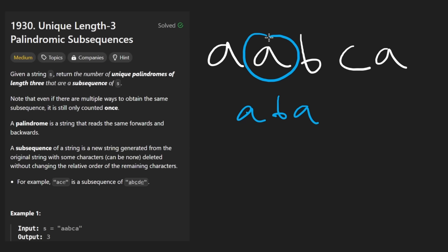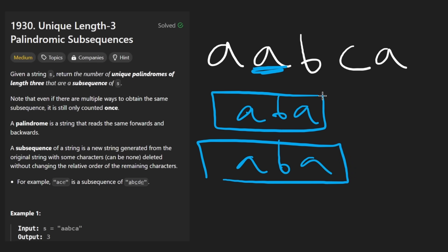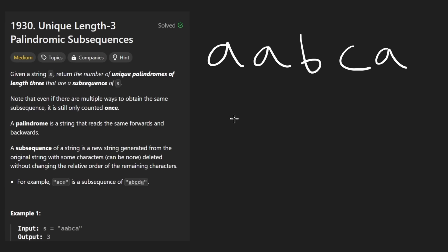And the main reason for that is in this problem, they actually only want us to track the unique palindrome. So if I were to have like A, B, A, and maybe I can form that another way with a second A on the left side, it doesn't matter. It's technically still the same palindrome. So we don't want to double count it.